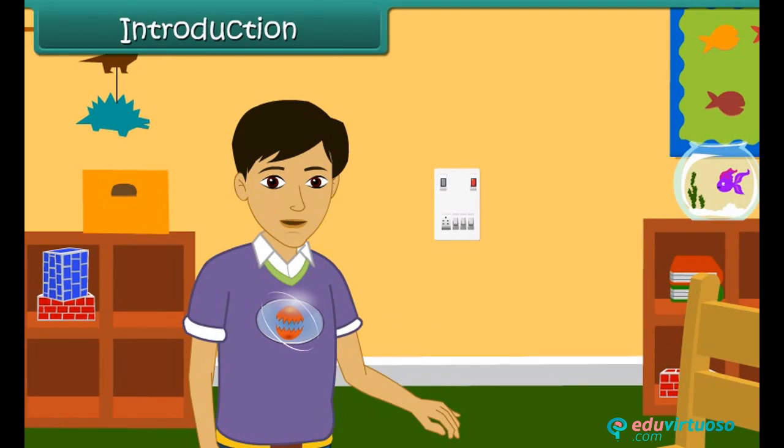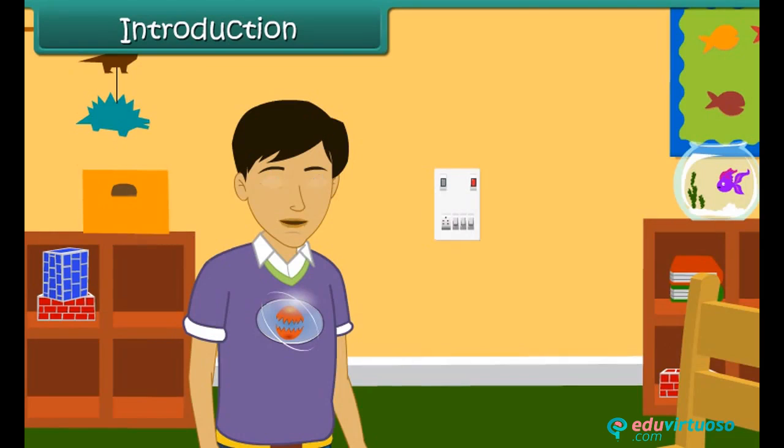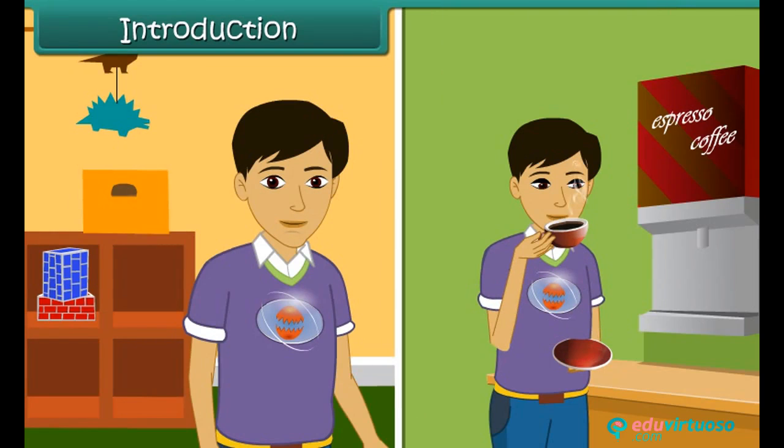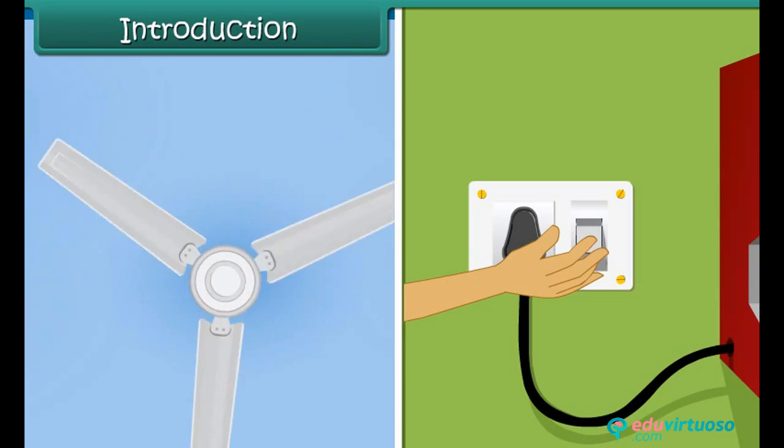When you are feeling very hot and need some air to cool yourself, the first thing you will do is switch the fan on. Or you want to have a cup of hot coffee to beat the cold winter. You press the switch to put the hot plate on. Why do you need to press the electric switch to revolve the fan or heat the plate?